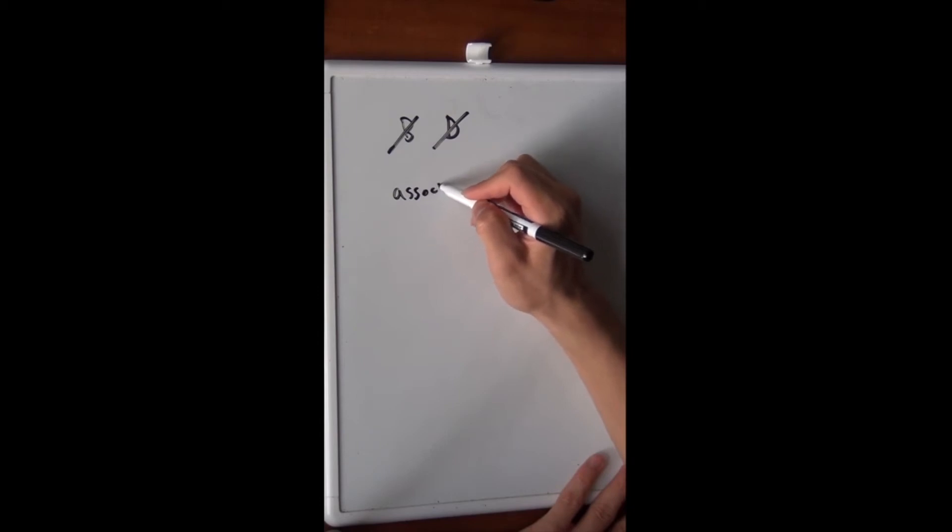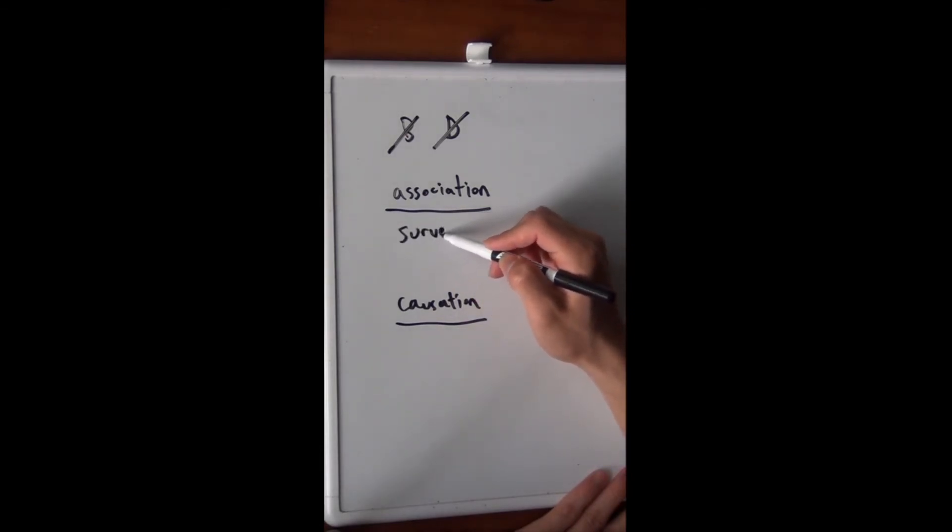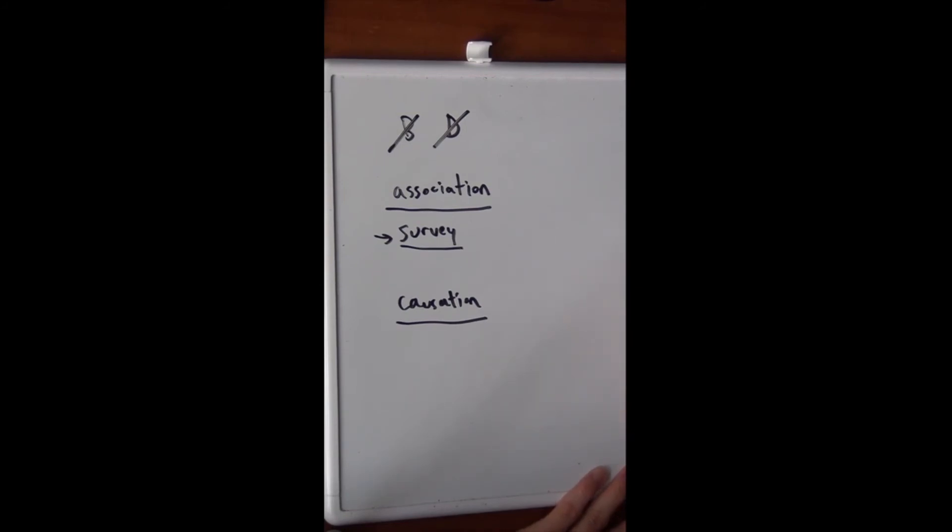Here we can take a moment to talk about the difference between association versus causation. They may sound very similar, but the research methods used to obtain conclusions about association versus causation are different. For an association study, as the question stem supplied, all we need is a survey. So that means we take a group of 16-year-olds and we ask them, how much do you sleep? How much do you exercise? And then we plot it and we see that there's a positive association.